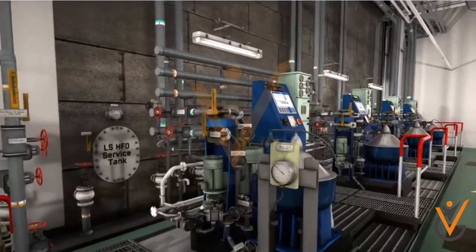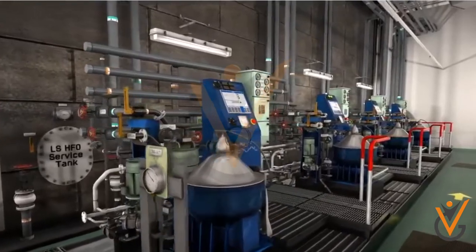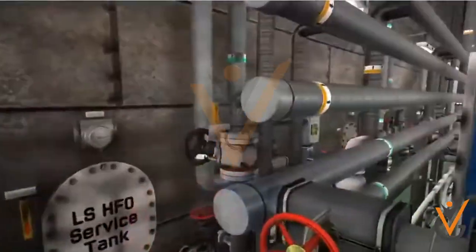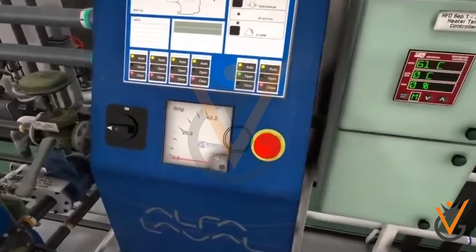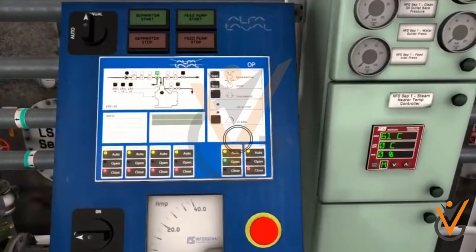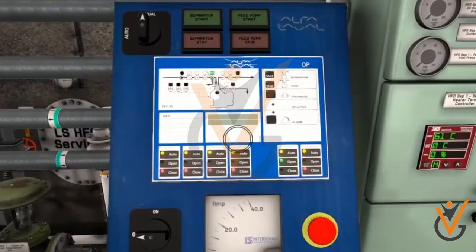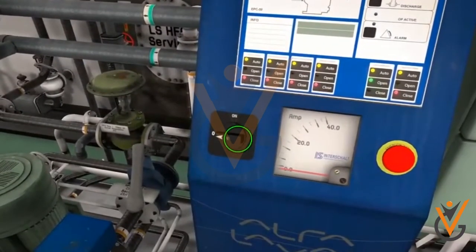The new age purifiers or clarifiers are automatically desludged at a regular interval by use of timer and controllers. A discharge detector on the sludge side monitors the sludge side and provides alarm signal if any abnormality is detected.